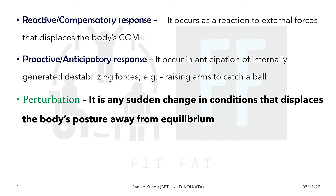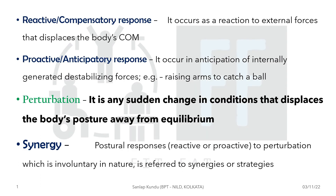The third is perturbation. It is any sudden change in conditions that displaces the body's posture away from equilibrium. For example, suppose you are walking and someone pushes you from the back — it changes your body's equilibrium. So the push is causing the perturbation.